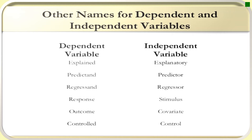The alternative names for dependent variable are: explained, predictant, regressant, response, outcome, and control.